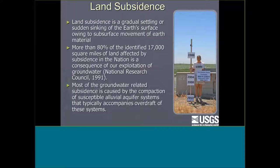The type of subsidence I'm talking about — related to the exploitation of groundwater — is particularly important in California and in our nation. Almost 80 percent of the identified subsidence area in the U.S. is associated with groundwater exploitation. Most of that is caused by the compaction of susceptible alluvial aquifer systems, and I'll get into what 'susceptible' means.